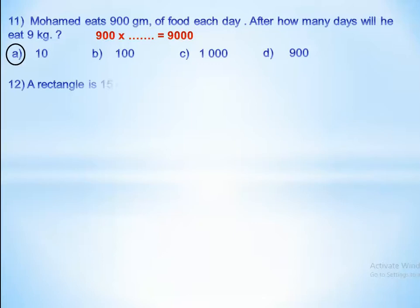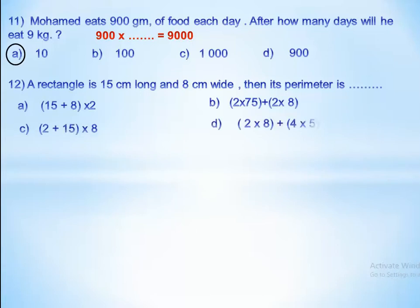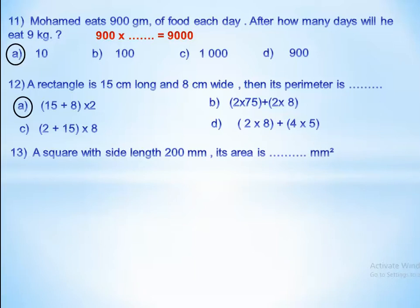A rectangle is 15 centimeters long and 8 centimeters wide. We need the perimeter. We know there are three equivalent formulas for the perimeter of a rectangle. The correct one here is: (length plus width) times 2, which means (15 plus 8) times 2.